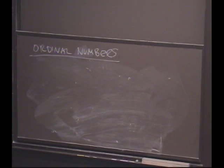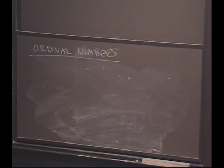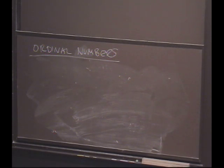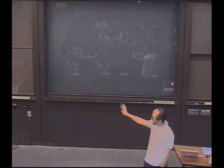Once we define ordinal numbers, then we'll be able to say what it means to do transfinite induction. Induction, if you recall, is basically a way of reasoning about a whole family of statements — countably infinitely many statements. And so what transfinite induction will allow us to do is to reason about a whole family of statements where the set of statements might be possibly uncountable.